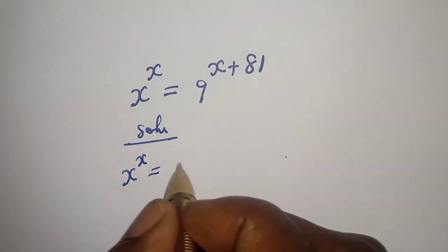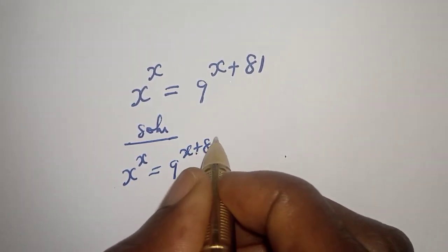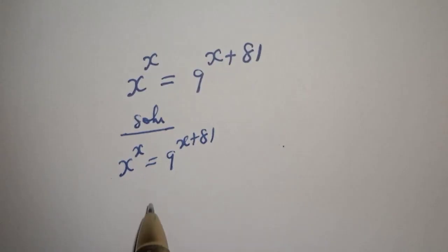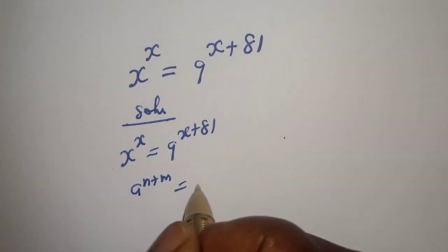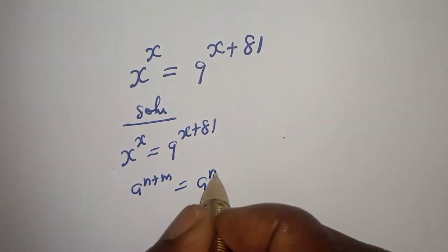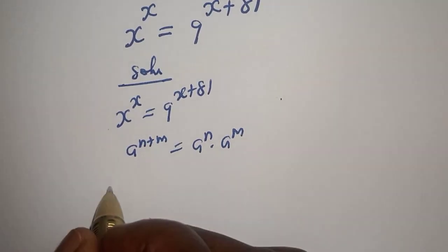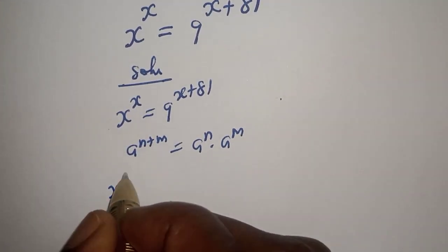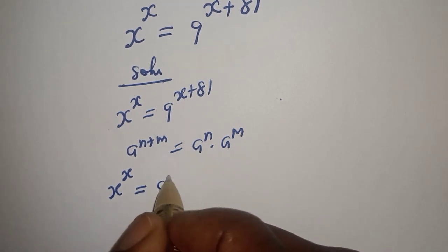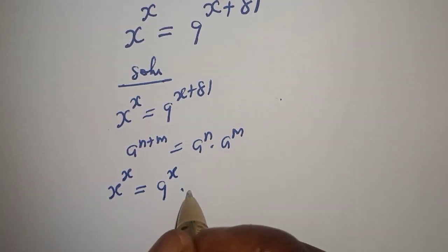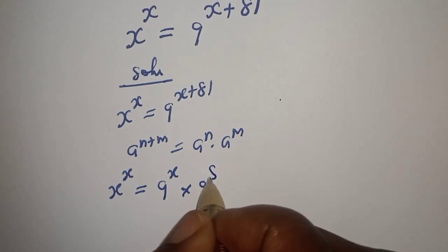S raised to power S is equal to 9 raised to power S plus 81. Using the rule that A raised to power N plus M equals A raised to power N multiplied by A raised to power M, this can be written as S raised to power S is equal to 9 raised to power S multiplied by 9 raised to power 81.